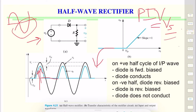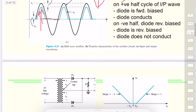We can use the diode exponential characteristics to get exact transfer characteristics, but our simplified model is sufficient here since the AC signal is always changing. One limitation is that this doesn't work for small input signals — for example, we cannot rectify a 100 mV signal this way. For those cases we need a precision rectifier, which is another class of rectifiers we will look at.